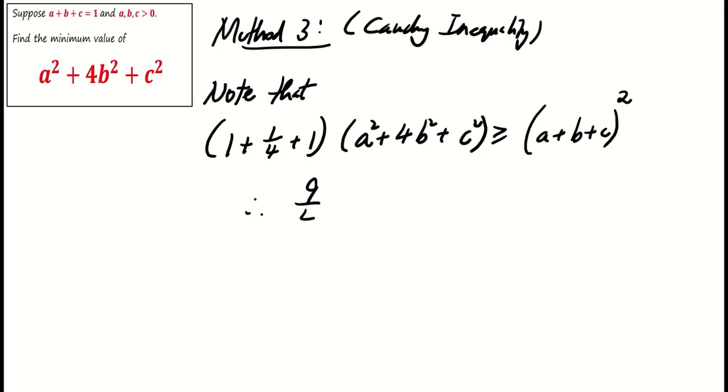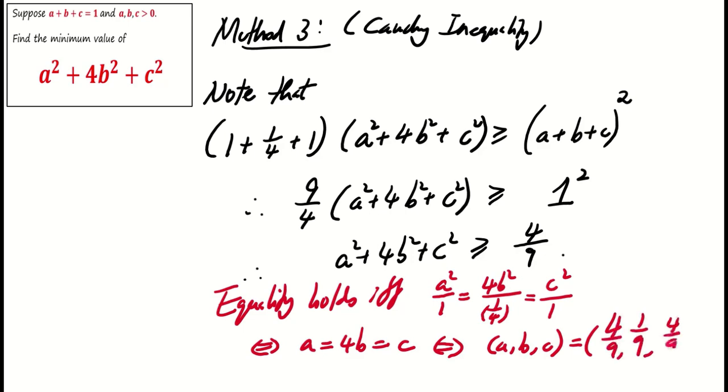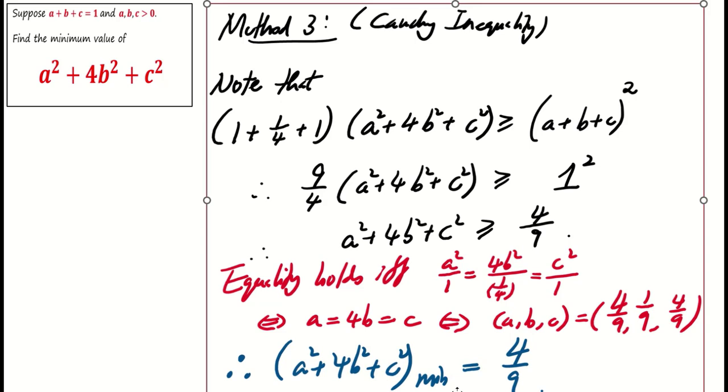Hence, 9 over 4 times a square plus 4b square plus c square is at least 1. Equality holds if and only if a equals 4b equals c. Thus, abc equals 4 over 9, 1 over 9, 4 over 9. This concludes method 3.